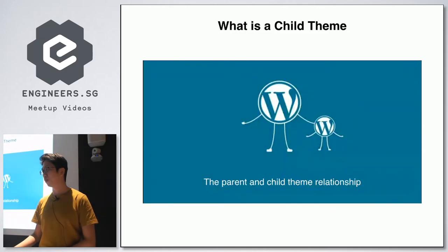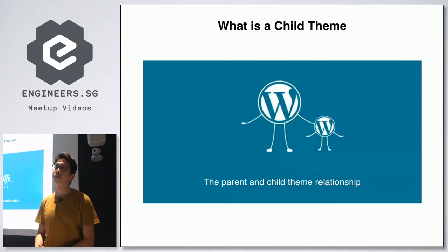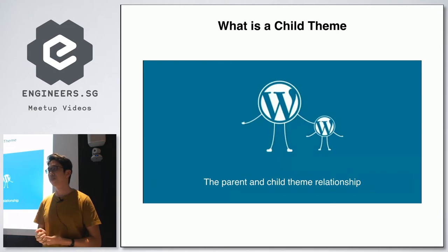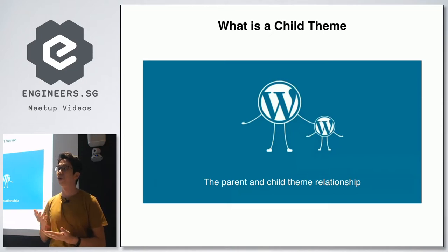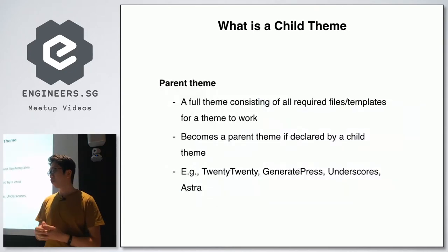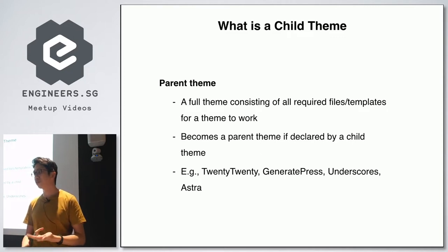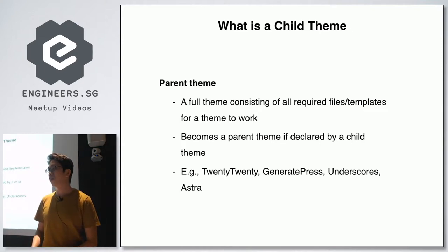Before we look at a child theme, it's important to understand the parent and child theme relationship in WordPress. A theme in WordPress is a folder that consists of a lot of files — template files, static assets — all required for your WordPress site to look properly on the front end. Those are considered a full theme. Some of the more popular ones include Twenty Twenty, GeneratePress, Underscores, Astra, and many more.